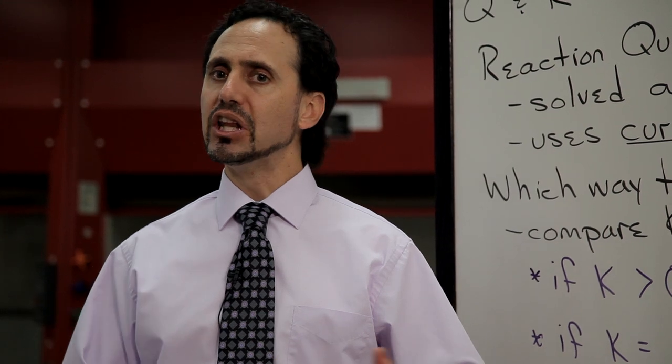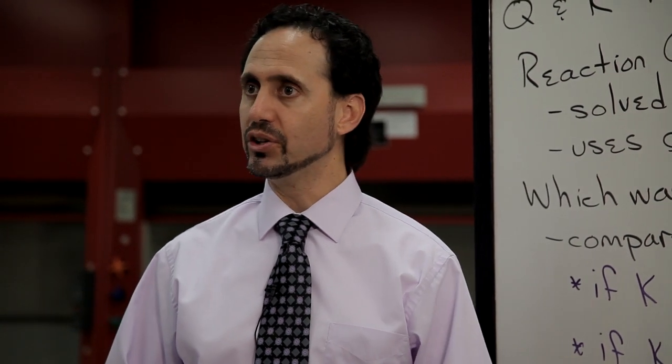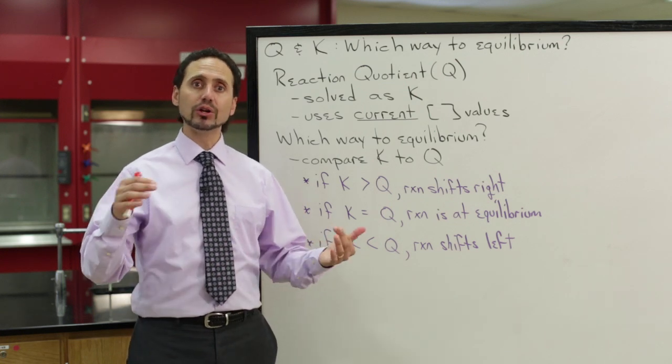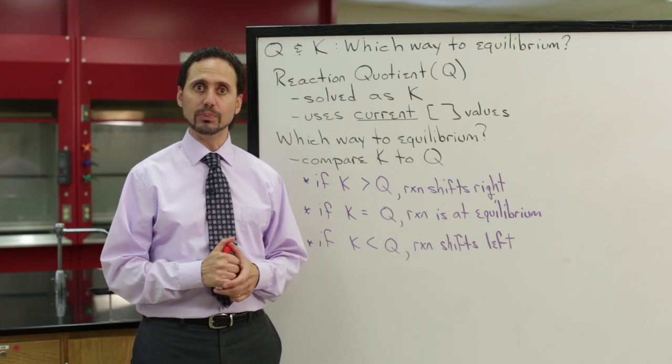Equilibrium is kind of the lowest point, the downhill point for any reaction. So, if a reaction is not at equilibrium, which way will it roll to reach that downhill point?